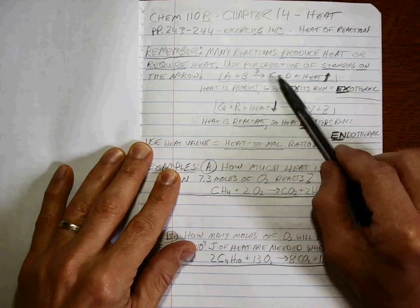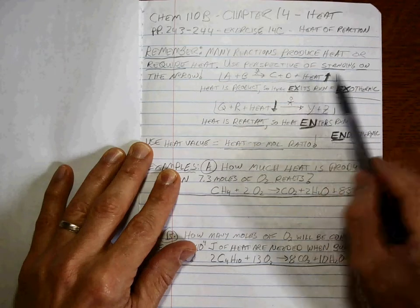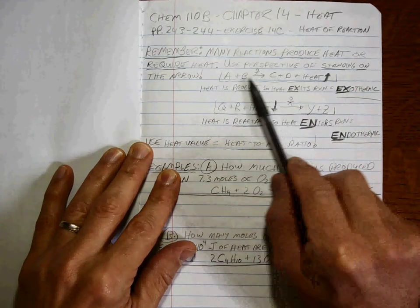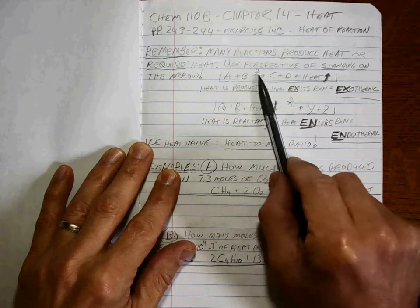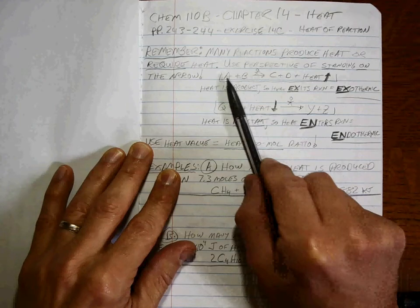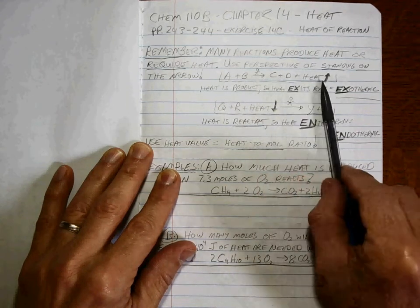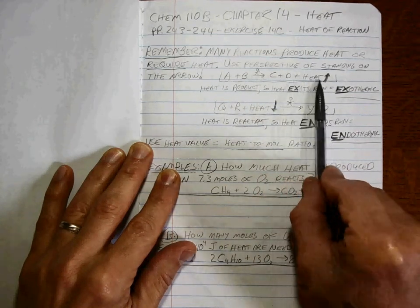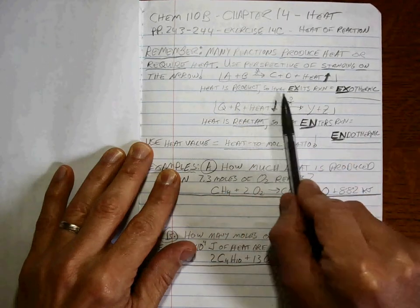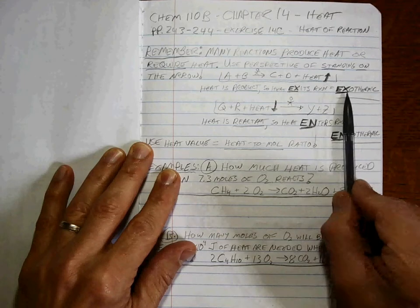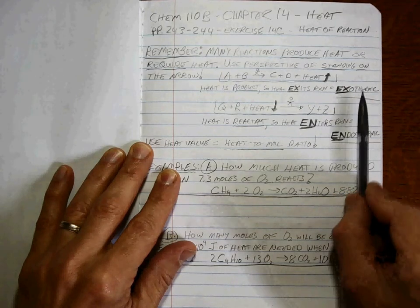To understand what's going on, use the perspective of standing on the arrow of the reaction. If the reactants react, the products are made, and heat is produced and leaves the reaction. Heat is a product, so the heat exits the reaction. This is called an exothermic reaction.